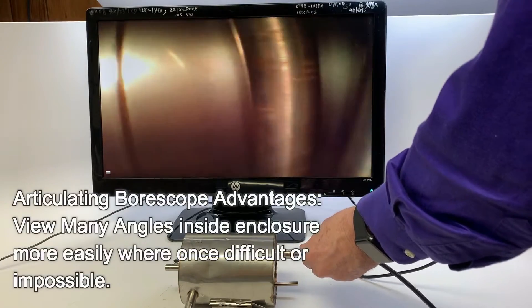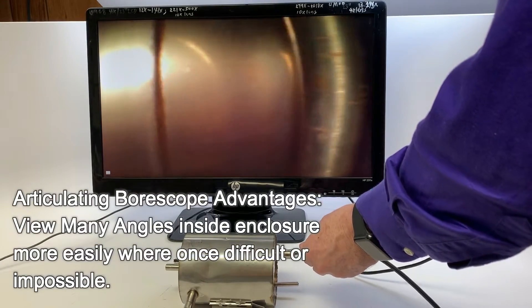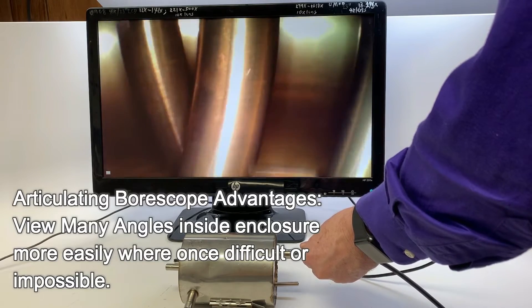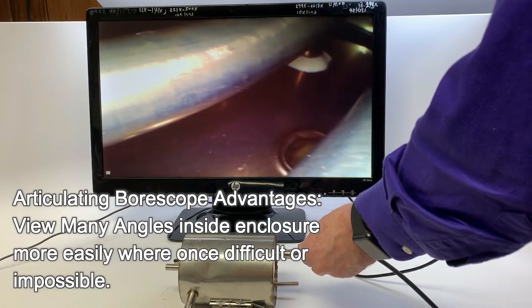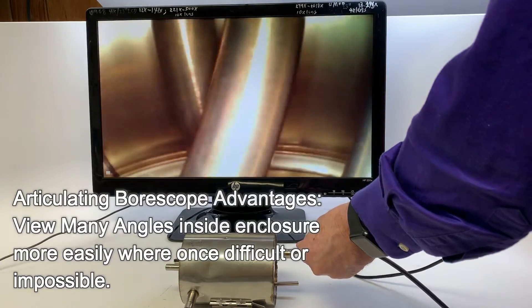As we have demonstrated, boroscopes offer the advantage of being able to see at angles that are normally difficult or impossible to see with greater ease. A good example would be turning the camera back to inspect the valves in an airplane or automotive cylinder.